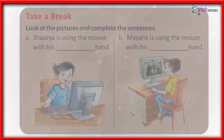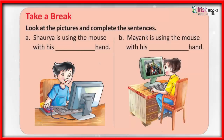Take a break: Look at the pictures and complete the sentences. Shouria is using the mouse with his hand. Mayank is using the mouse with his hand.